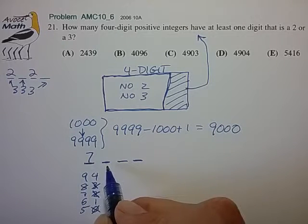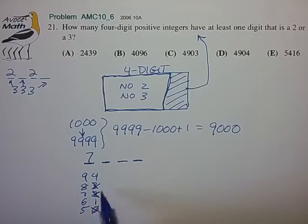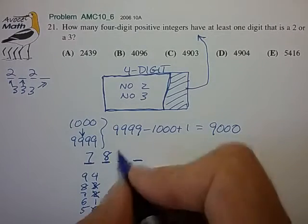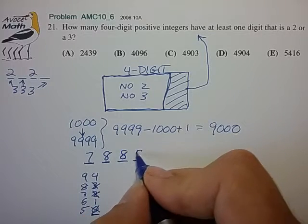Now in the next digit over, the hundreds place digit, we essentially have the same choice of digits, but now we can include 0 because it's not the leading digit. And we have 8 possible choices, and likewise for the tens and the units digit.